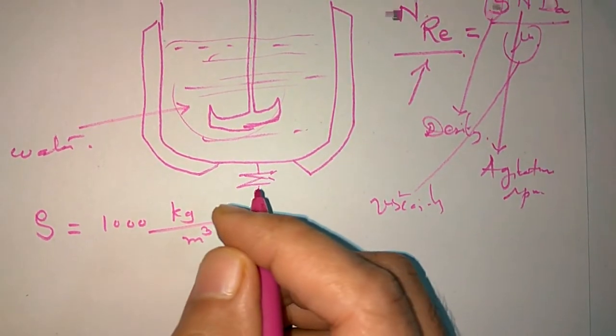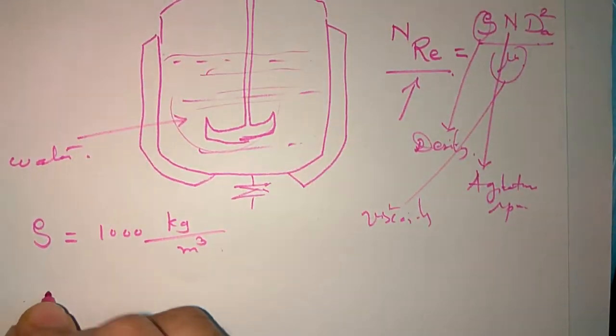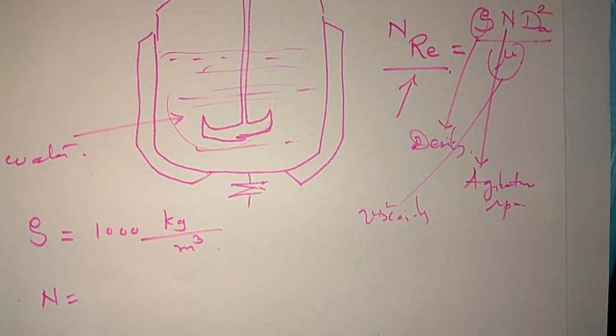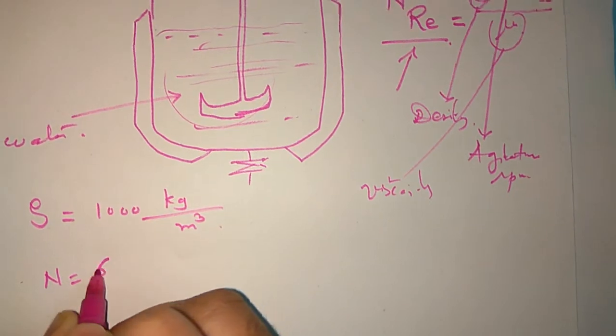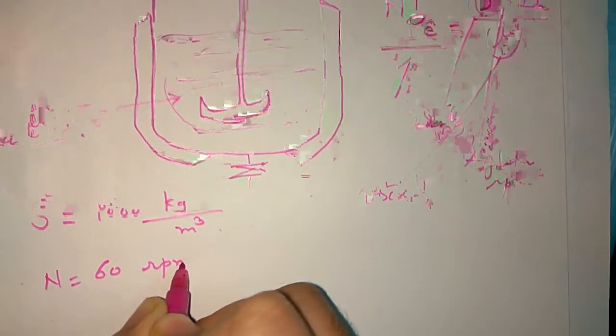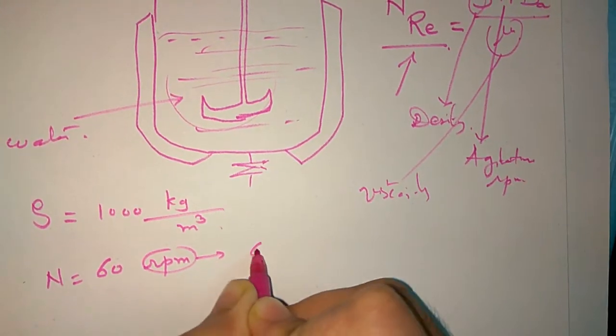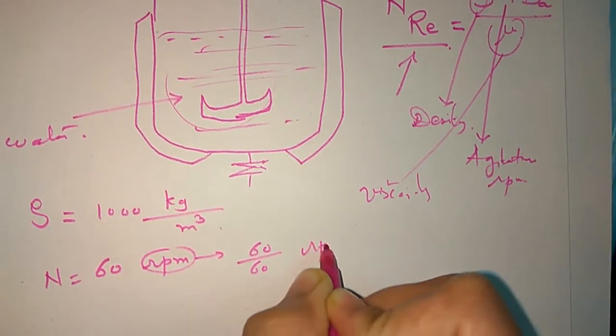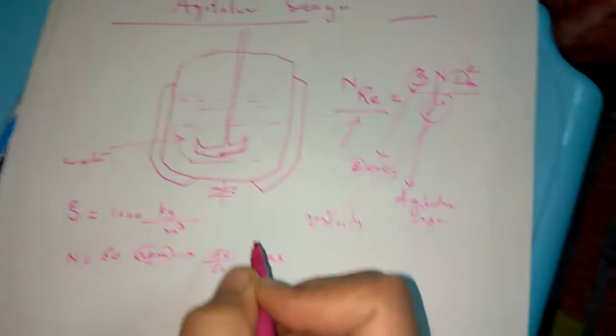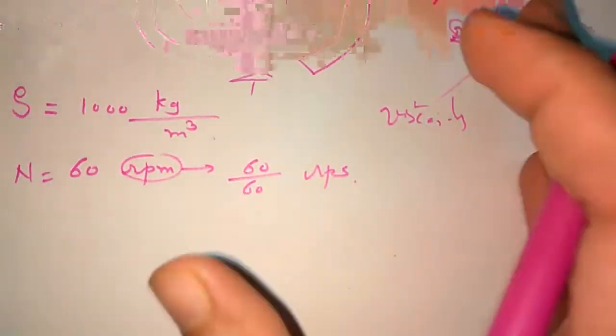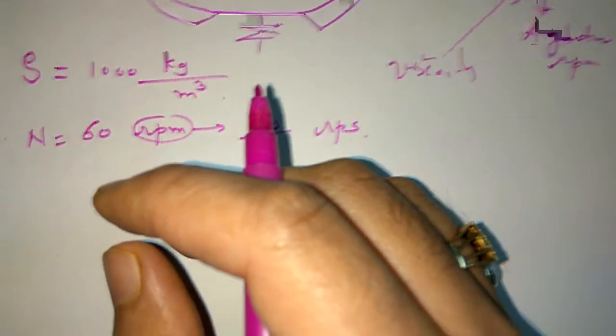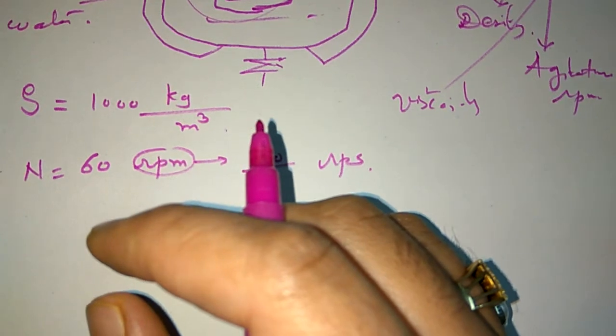For water we know the rho, the density of water. Generally we take 1000 kilograms per meter cubed. Now RPM, what we take RPM in the reactor. If we have RPM equal to 60, then 60 divided by 60 is the RPS, rotations per second.